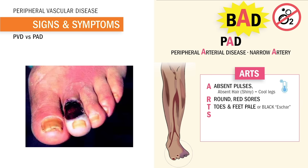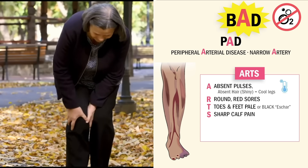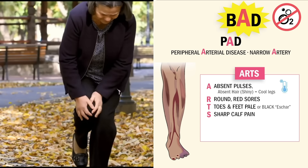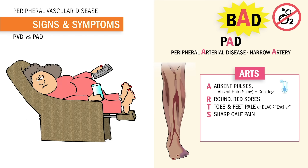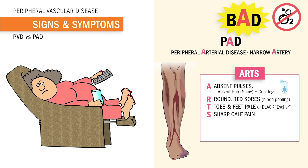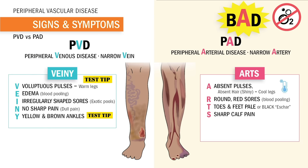Big NCLEX tip: those black, crispy feet are dead tissue. The toes have suffocated to death and usually have to be amputated. S is for sharp pain in the calves when stressed — like during exercise or even elevation, like sitting in a recliner at night. This pain is the warning sign of low oxygen. Write this down: it's called intermittent claudication. This key term comes up a lot on exams and the NCLEX specifically for PAD.